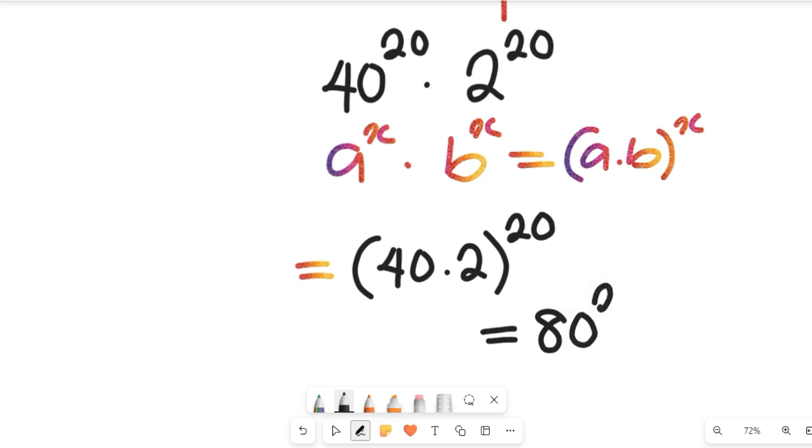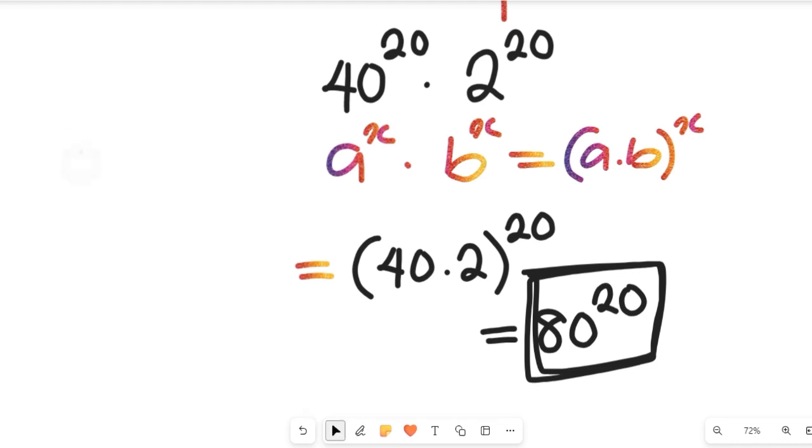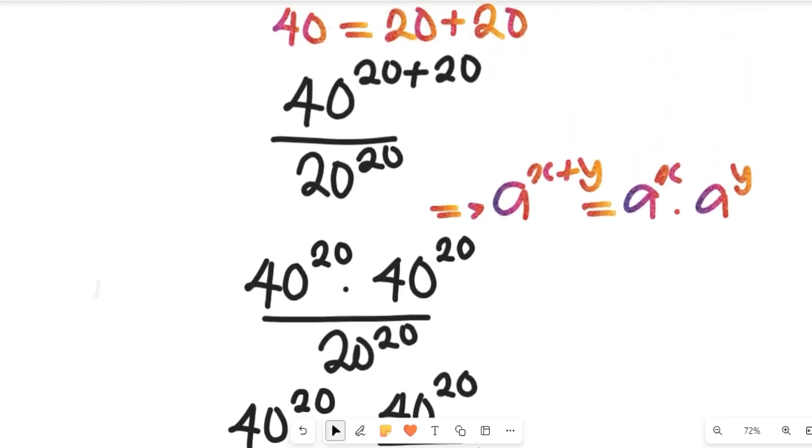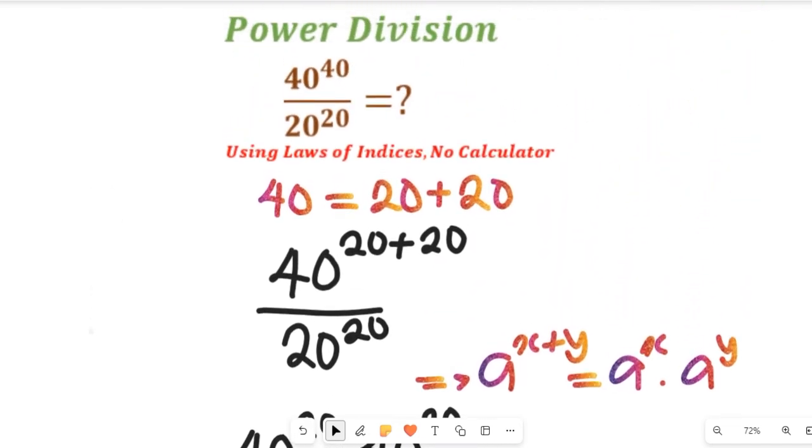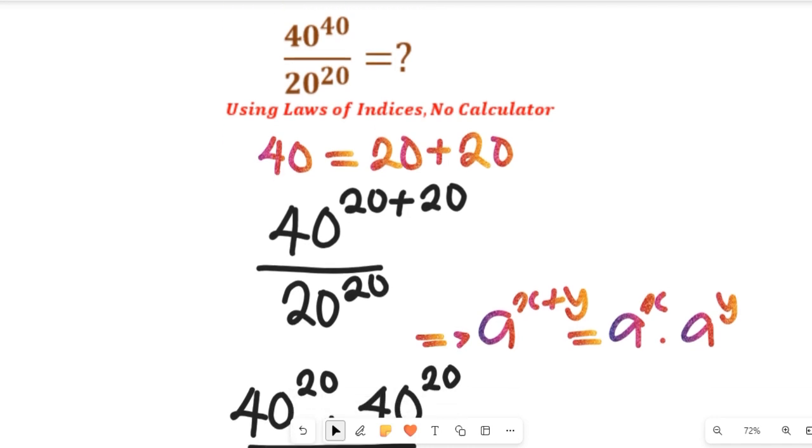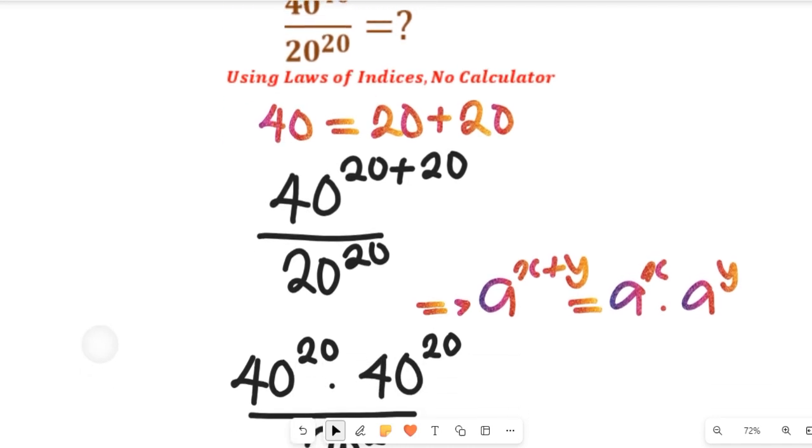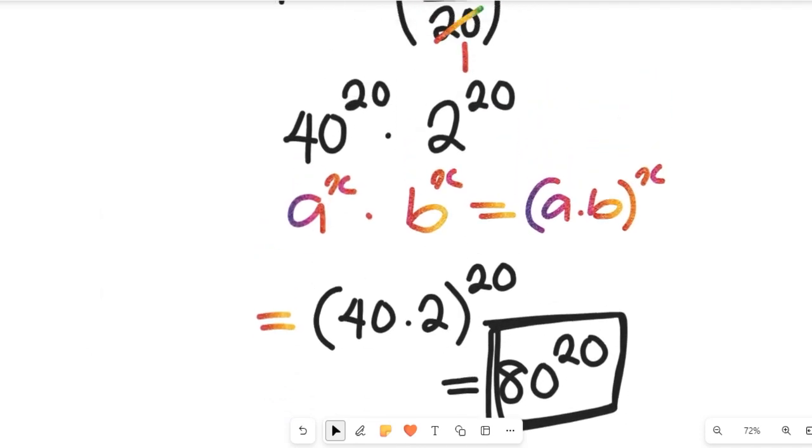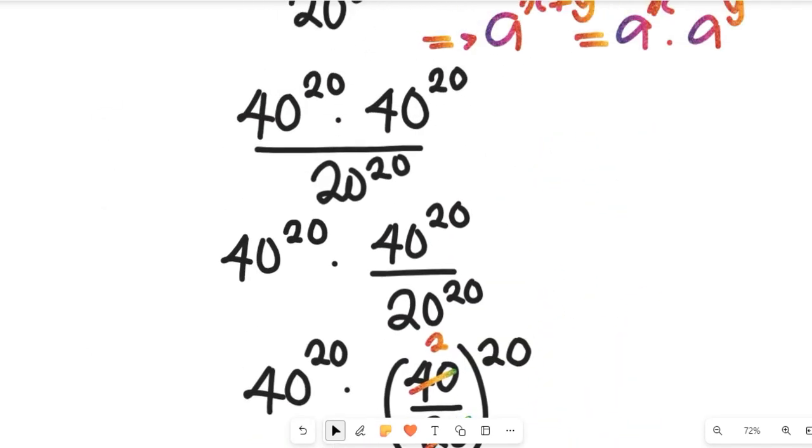So that is the solution to this exponential equation. It's pretty simple, but it requires great logic. That means we will simplify this expression 40 to the power of 40 divided by 20 to the power of 20, and we are simply going to have 80 to the power of 20.